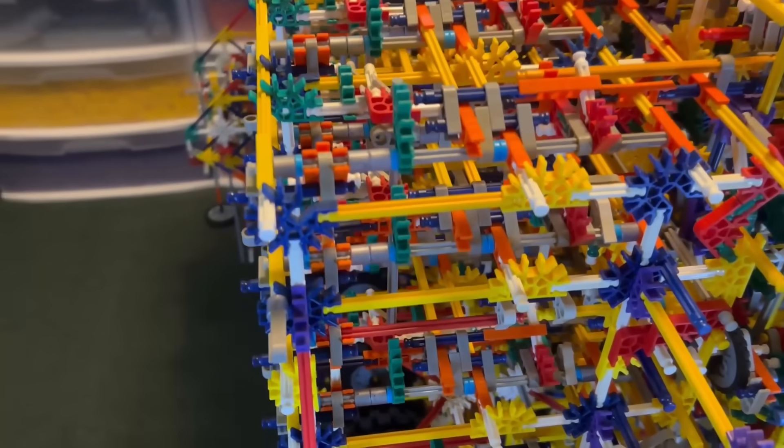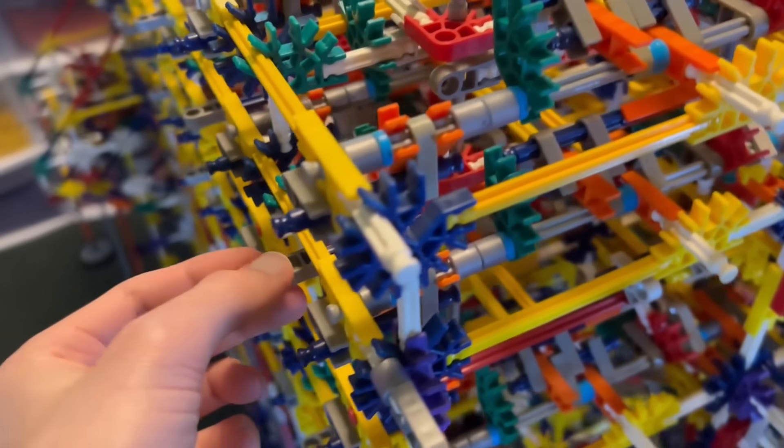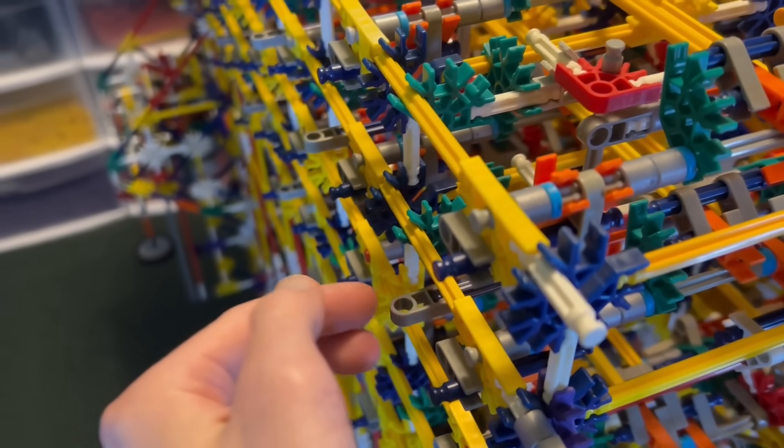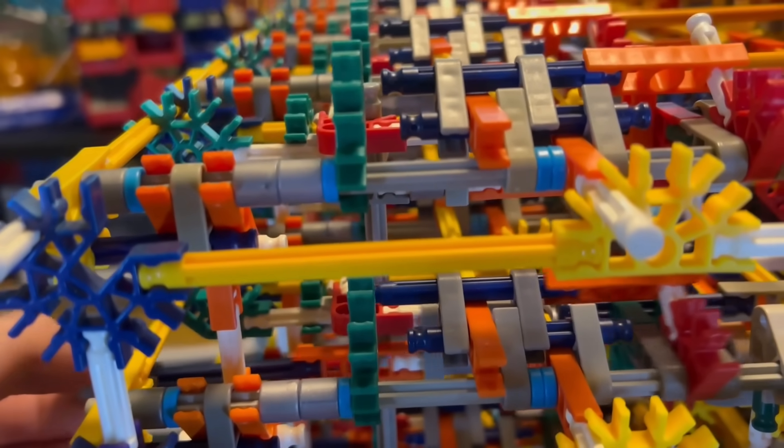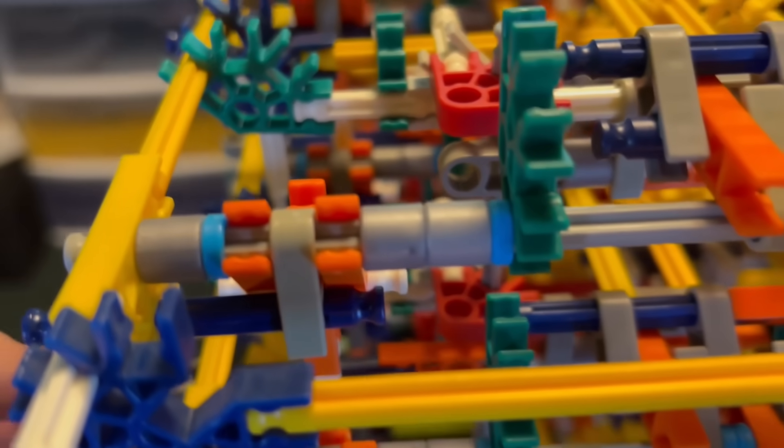So for now all you need to know is one bit is stored like so. When I pull this out that stores a 1 and having it pushed in that counts as a 0. You can see that blue rod going left and right. When it's over the green connector that's a 1.